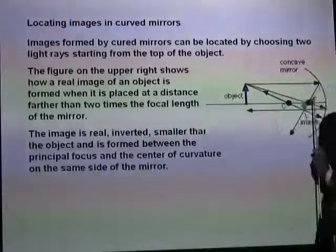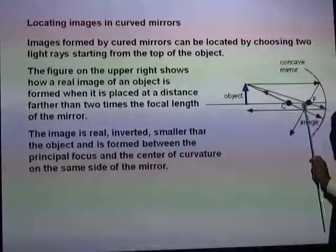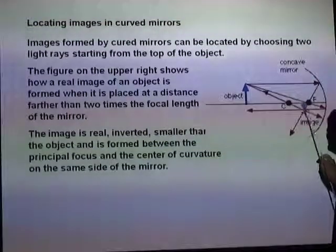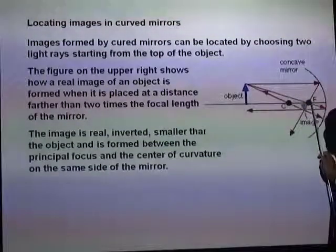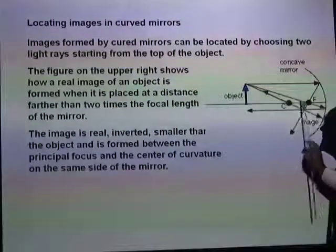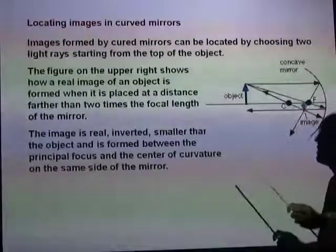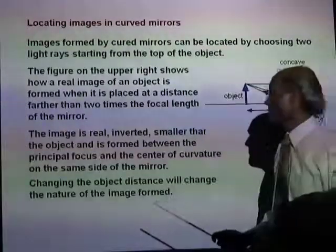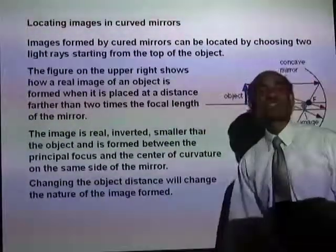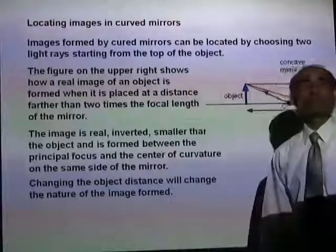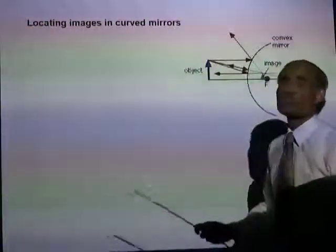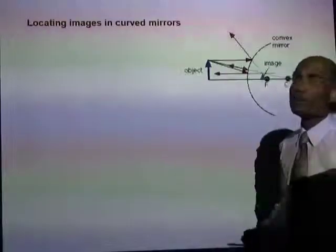In such a case, the image formed will be very small, it will be inverted, and will be formed between the principal focus and the center of curvature on the mirror. Changing the object distance will change the nature of the image formed.